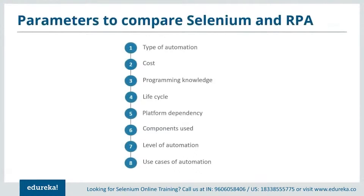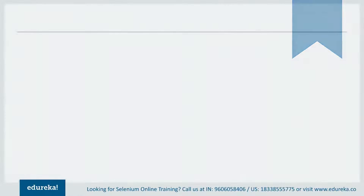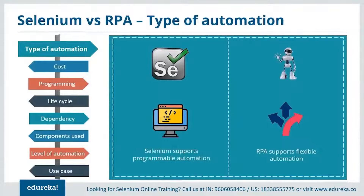Let's look at the parameters for comparing the two automation giants: type of automation, cost, programming knowledge required, life cycle, platform dependency, components used, level of automation, and use case. Starting with type of automation — Selenium supports programmable automation, whereas RPA supports flexible automation. Programmable automation changes the sequence based on user requirements, whereas flexible automation is a hybrid of fixed and programmable automation.